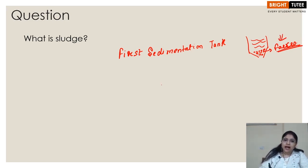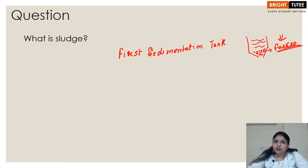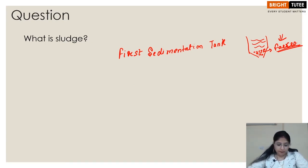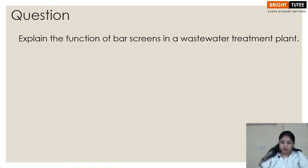This settled solid matter is called sludge. Once removed, the sludge is kept in a separate tank where decomposition takes place, and the byproduct — biogas — is used for fuel and the production of electricity.